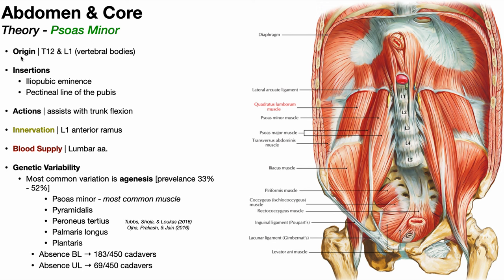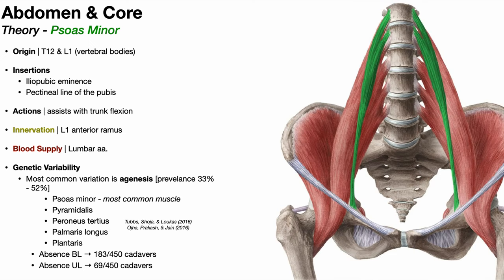The psoas minor originates off the vertebral bodies of T12 and L1. You can see the very thin muscle here at T12 and L1. It has a musculotendinous junction and eventually becomes a tendon, inserting on the iliopubic eminence and the pectineal line of the pubis. It never exits the pelvic cavity, unlike the psoas major behind it, which clearly does as it travels to the lesser trochanter of the femur.